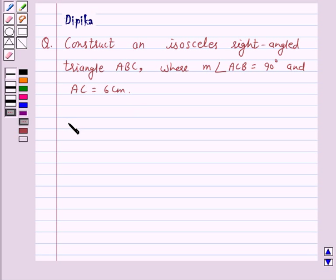Let us first understand the definition of isosceles right-angled triangle.